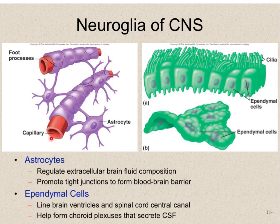We can see again that in the case of these neuroglia, they're not actually making contact with a neuron, but they have the same basic structures — a cell body and outgrowths that are serving as the structural barrier between the capillary and the rest of the nervous system. There are different types of neuroglial cells. For example, some are interesting if you're studying the anatomy of the brain, but we're not going to be looking at that this year.